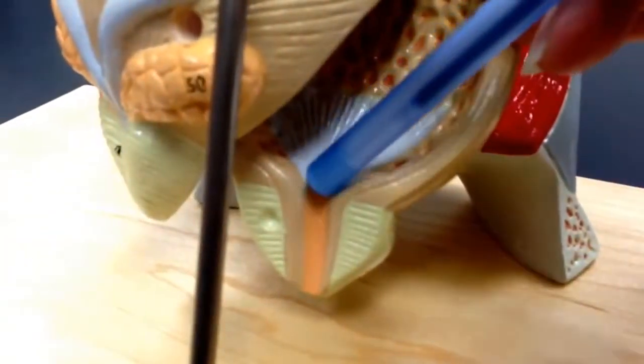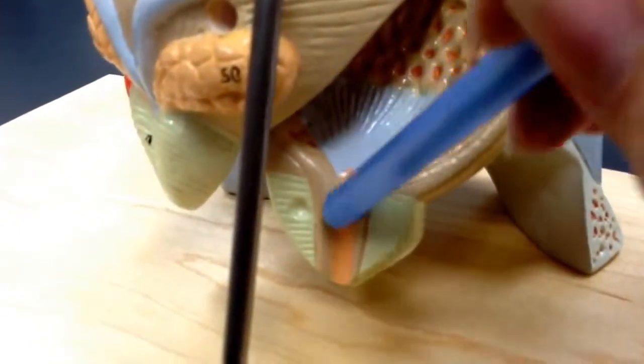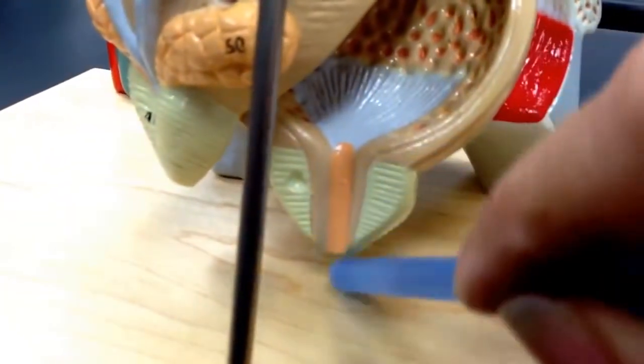And then here is the urethra. Coming out of the bladder is the urethra and on a male it's a lot longer than this.